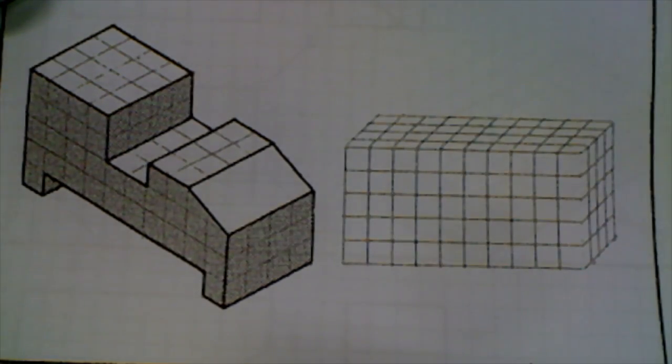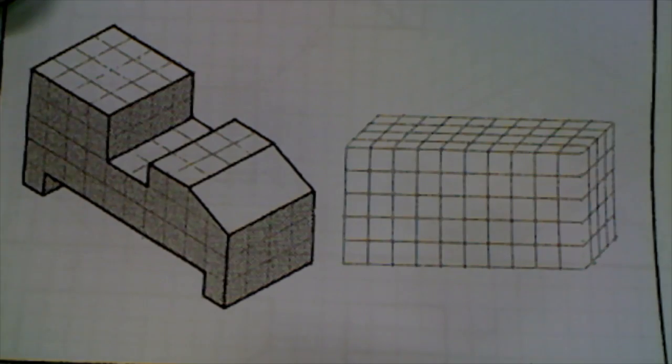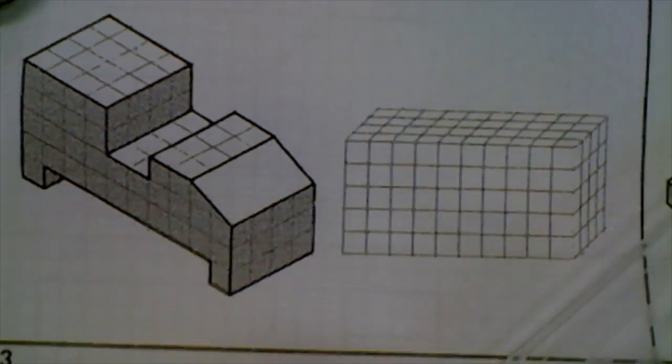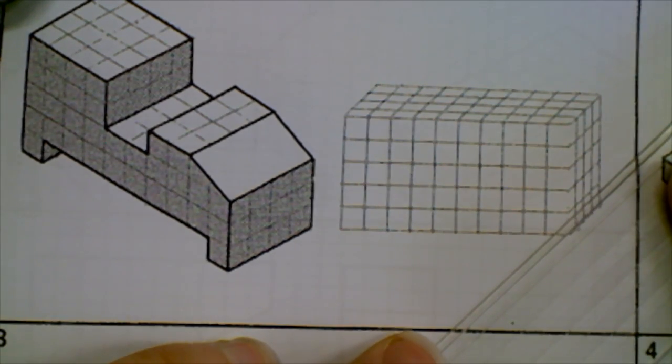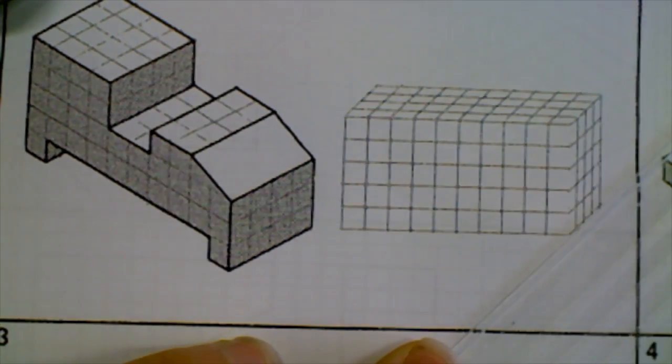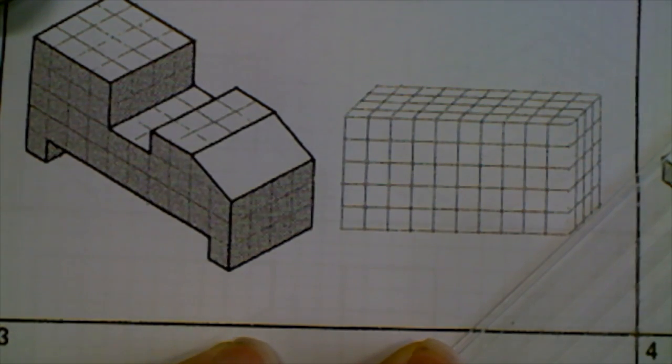You can find out if you've got the right one by putting your set square against one of these lines here. If the angle matches when you put your set square on a straight line, then that's 45 degrees. If not, you've got the wrong set square.